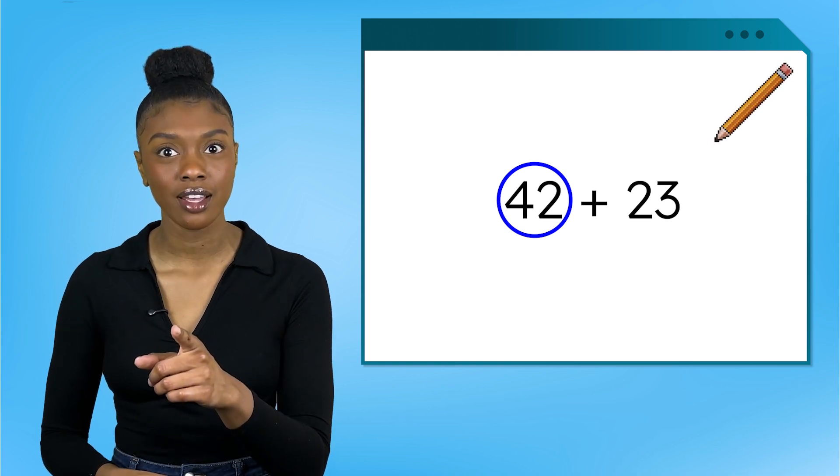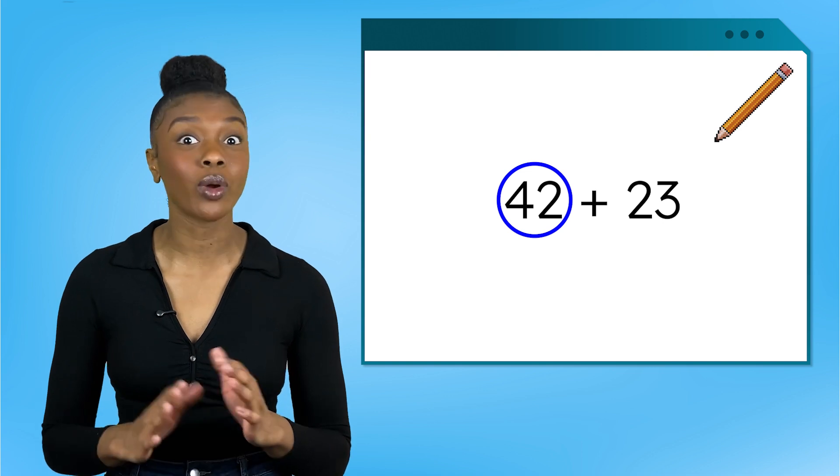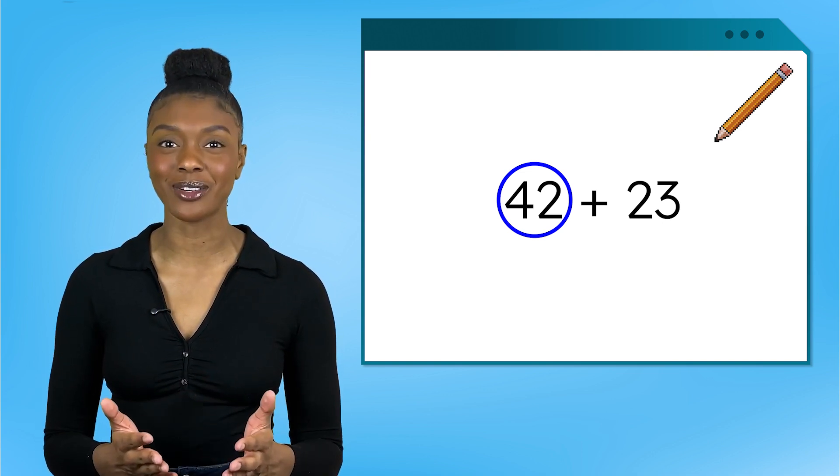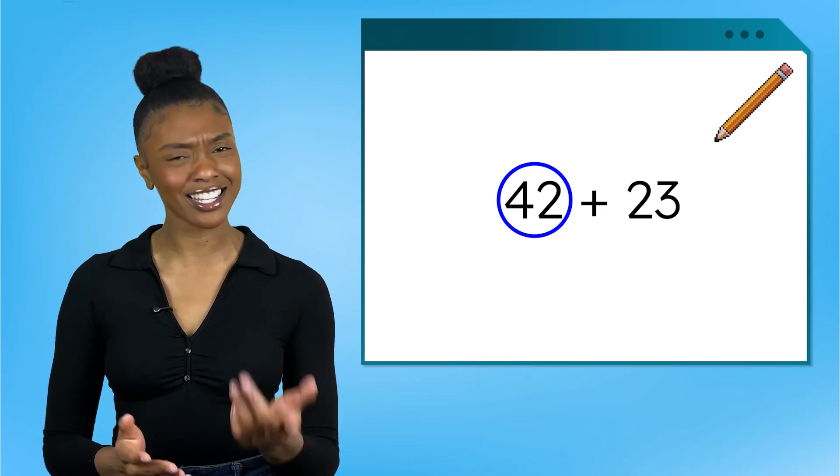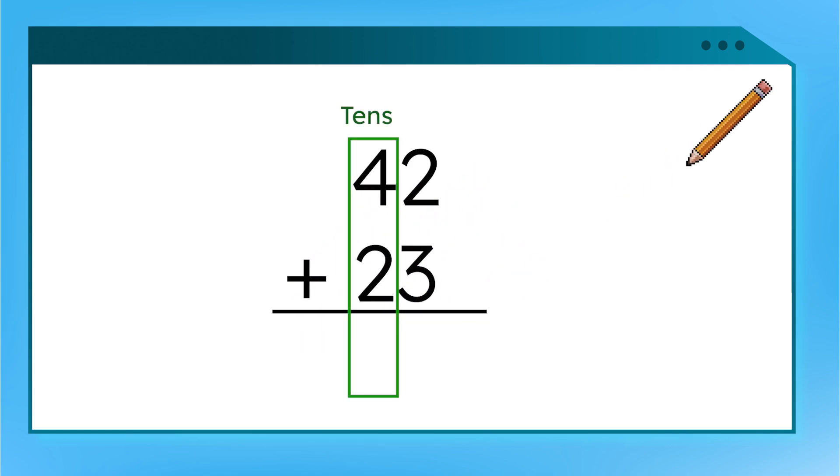I have an idea. Do you see this pencil that just appeared in the corner of our screen? Whenever you see this, it's your signal to grab your pencil and follow along in your guided notes. This means we'll be writing, solving, and thinking together. Let's give it a try. Find your guided notes and get your pencil ready. Great! You have your pencil too. We've learned how to stack numbers using place value to help us add. When we do this with two-digit numbers, we need to make sure to line up the tens and ones carefully, like this.